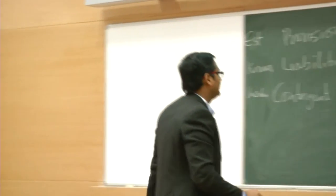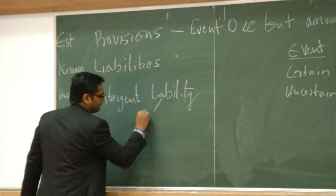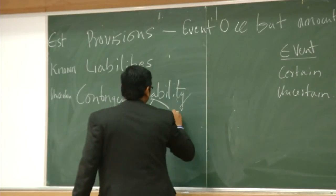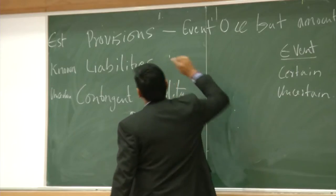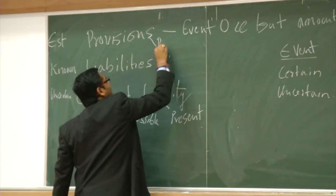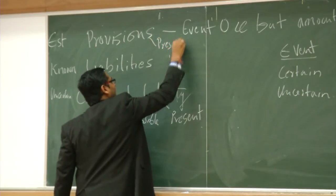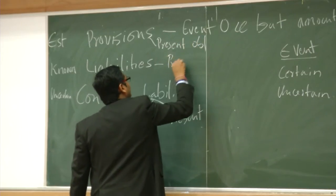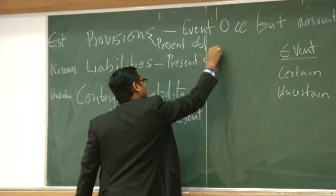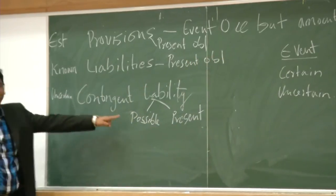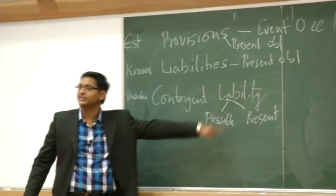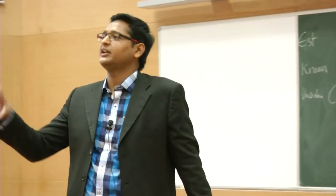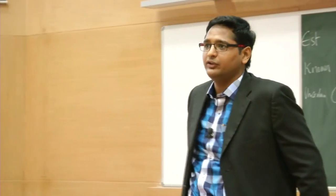In contingent liability there can be either a possible obligation or a present obligation. However, for a provision it is always a present obligation. For a liability there is always a present obligation. Contingent liability is not always a possible obligation — there can be a present obligation also. When can there be a present obligation that is still a contingent liability?